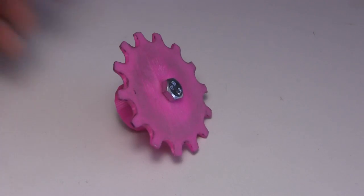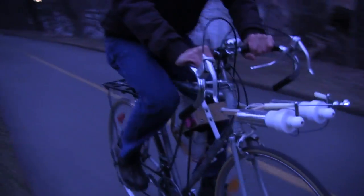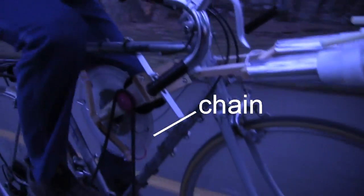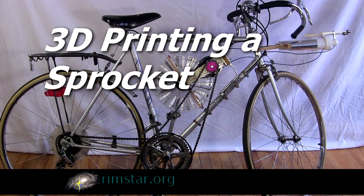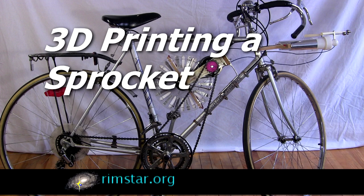Hi gang! Here's a 3D printed sprocket that I both designed and printed. I made it for my sparking bike. It's turned by this chain so that it can turn the disks of this Wimshurst machine, which creates the sparks. In this video I'll show you the steps that I went through to make that 3D printed sprocket.